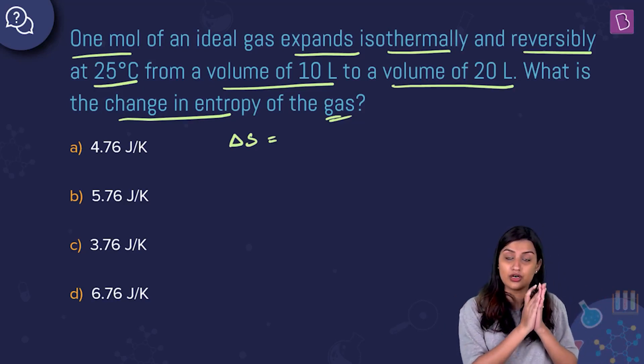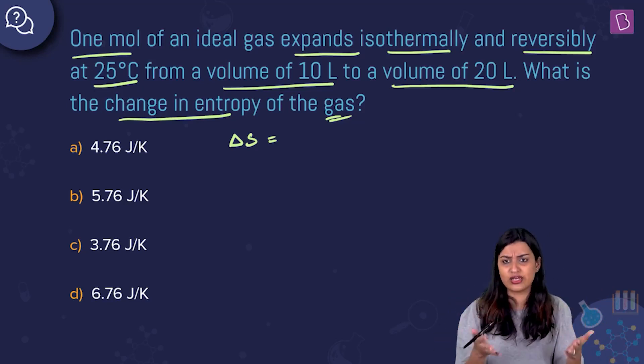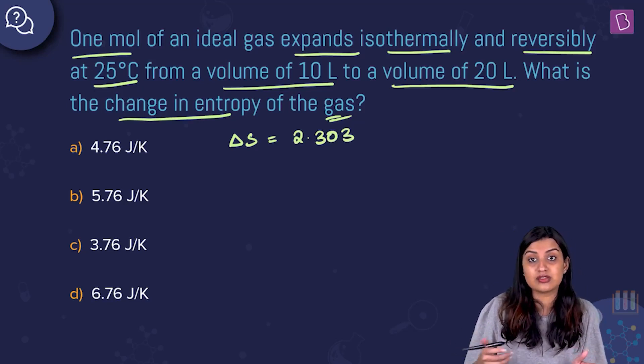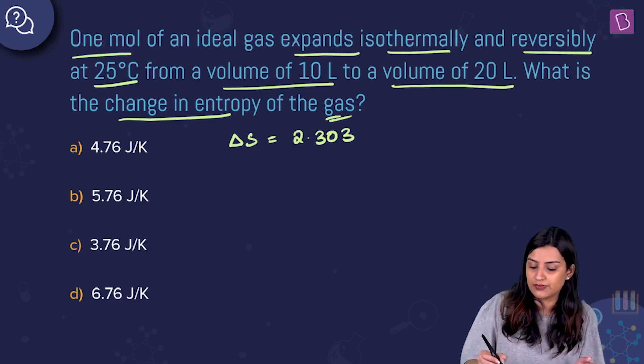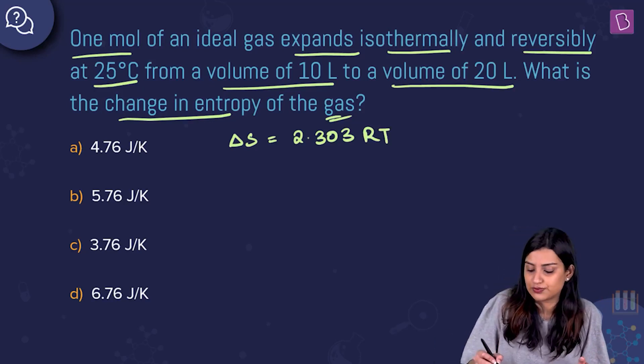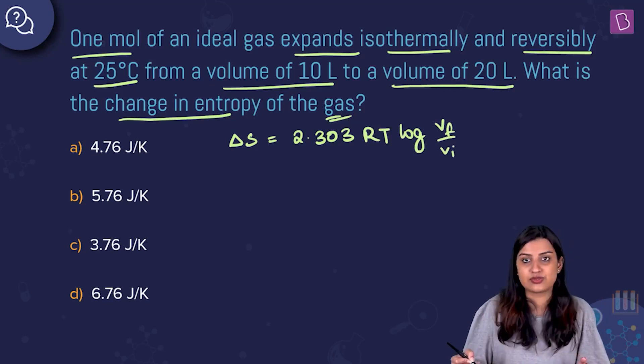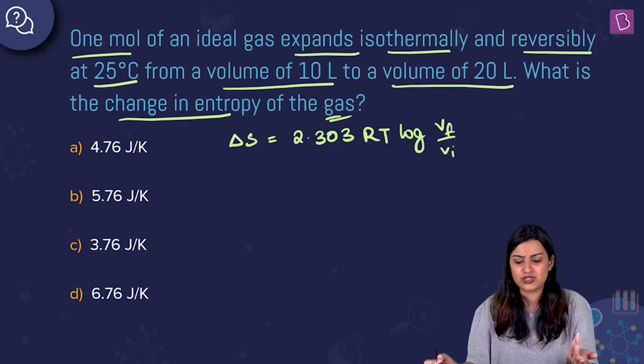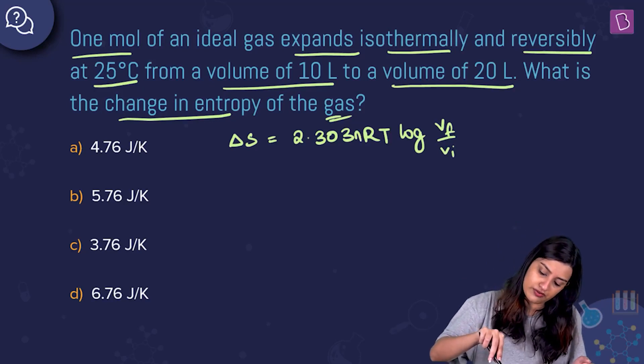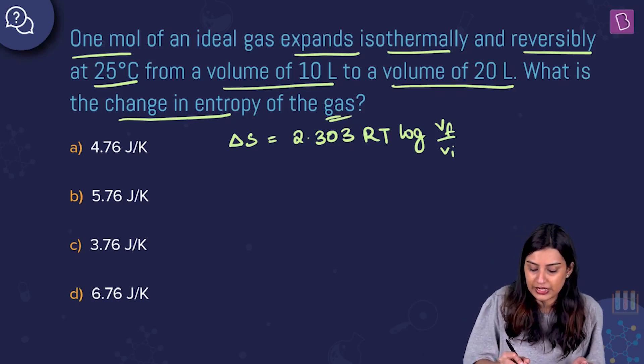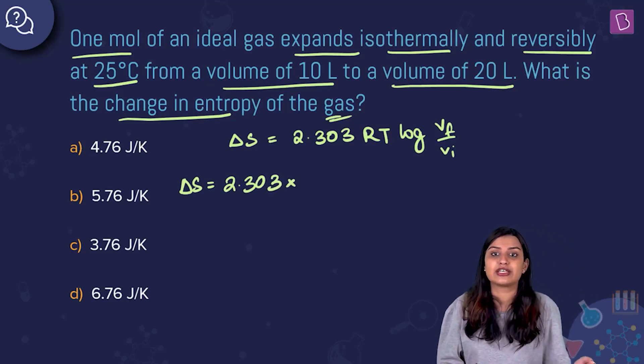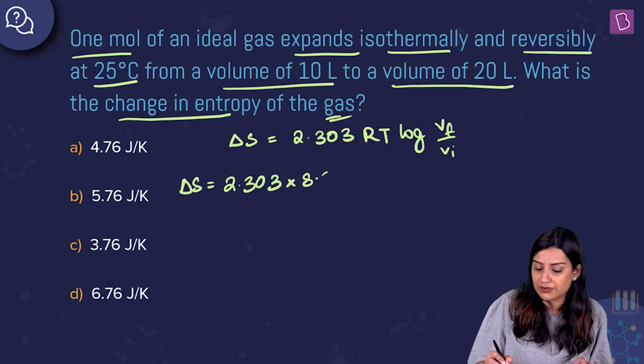If you want to derive it from first principles, be my guest. Go for delta H, go for Q, then do Q by T, Q reversible by T, then you will get delta S. I'm just going to use the formula here because I want to save my time. Delta S equals R log of V final by V initial. Everything is given to you and because it is one mole, I have not written n. Delta S is going to be 2.303 into R. Your options are in Joule per Kelvin, so take R as 8.314.